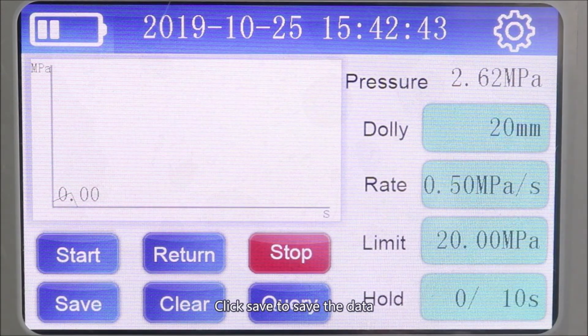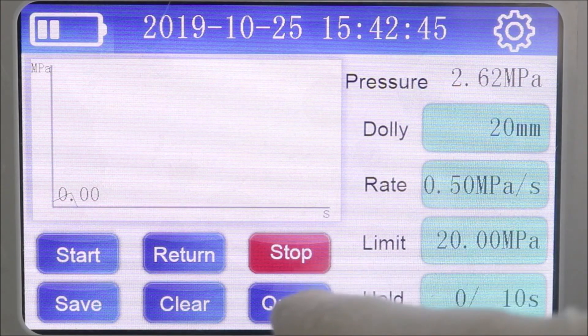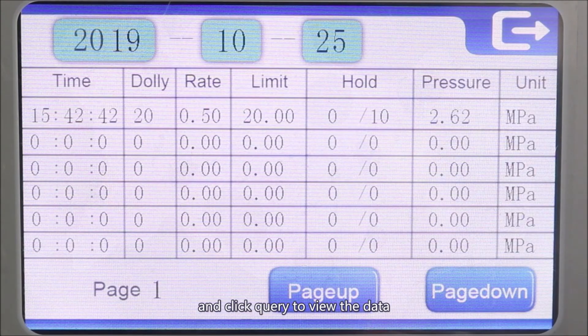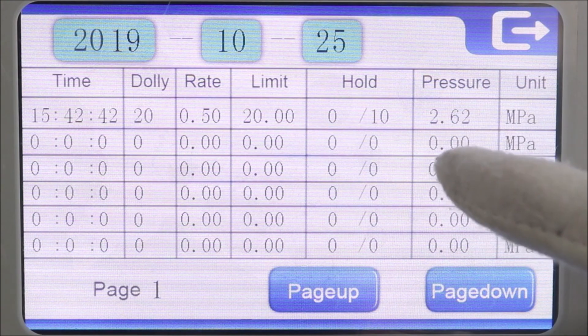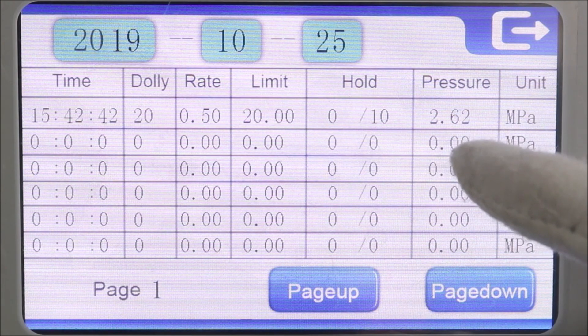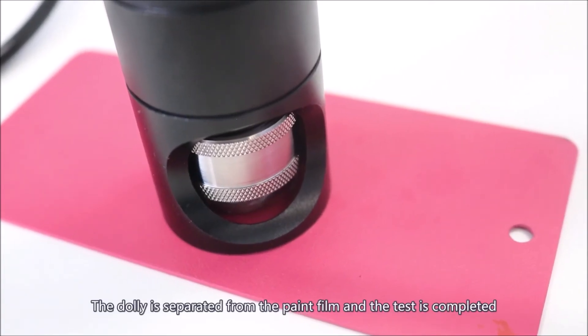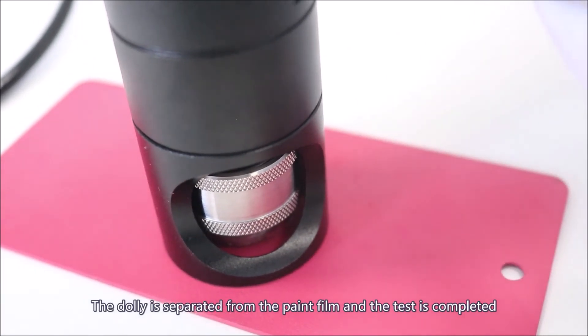Click save to save the data. Click query to view the data. The dolly is separated from the paint film and the test is completed.